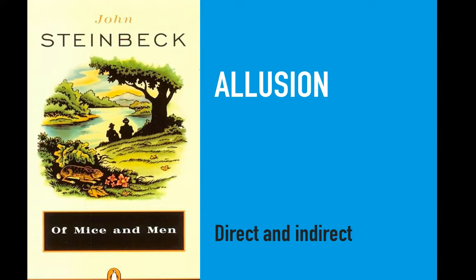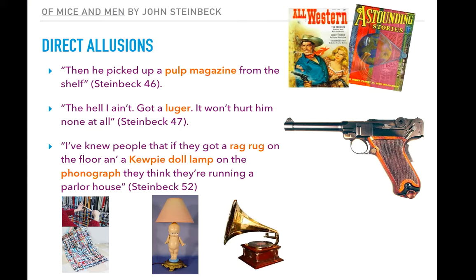Steinbeck uses allusions both direct and indirect. Here are some direct allusions. 'Then he picked up a pulp magazine from the shelf.' You can see in the right-hand corner there are a couple of examples of pulp magazines. That allusion is a bit difficult for us today; they are actually short stories and don't have a lot of pictures. The second example: 'The hell I ain't got a Luger.' That's a reference to a pistol used by the Germans in World War II.